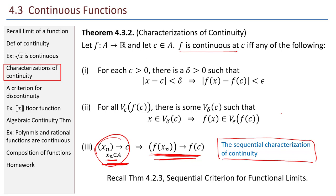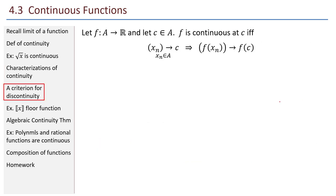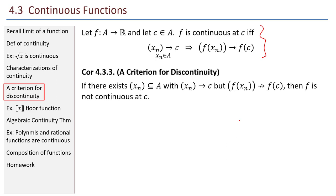The sequential characterization also provides a simple test to show when a function is not continuous at a point. The criterion for discontinuity: if there exists a sequence of values in the domain where the X values approach C, but the function values do not approach F of C, then F is not continuous at C. This is essentially the negation of the sequential characterization of continuity.